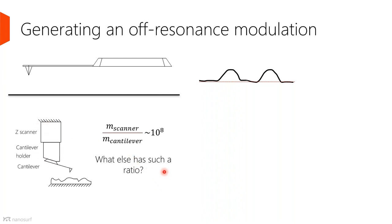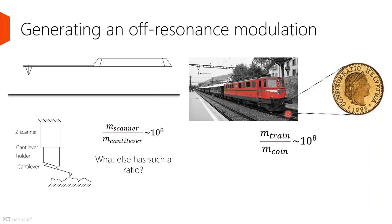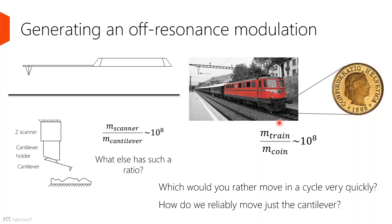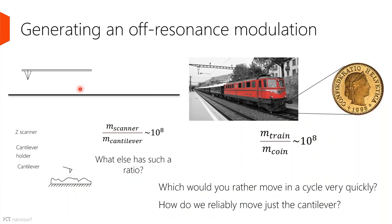For curiosity, I wondered what else might have a ratio of eight orders of magnitude in mass. In Switzerland we have lots of trains and money — if you take a small coin and compare its mass to a locomotive, it's also about eight orders of magnitude. So the question is: if you have to move something very quickly, would you rather just move the coin, or put the coin on a train and move the whole train? I would rather just move the smallest object possible — just the cantilever.